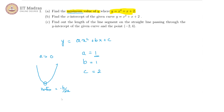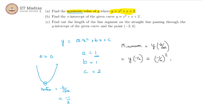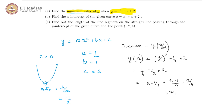We know our vertex for this particular equation is minus 1 by 2. The value of y at minus 1 by 2 would be the minimum. So the minimum is equal to y of minus b by 2a, which in this case is y of minus 1 by 2. Substituting that, we get minus 1 by 2 squared, minus 1 by 2, plus 2, which gives us 2 minus 1 by 4, equal to 8 minus 1 by 4, which is equal to 7 by 4, essentially 1.75.